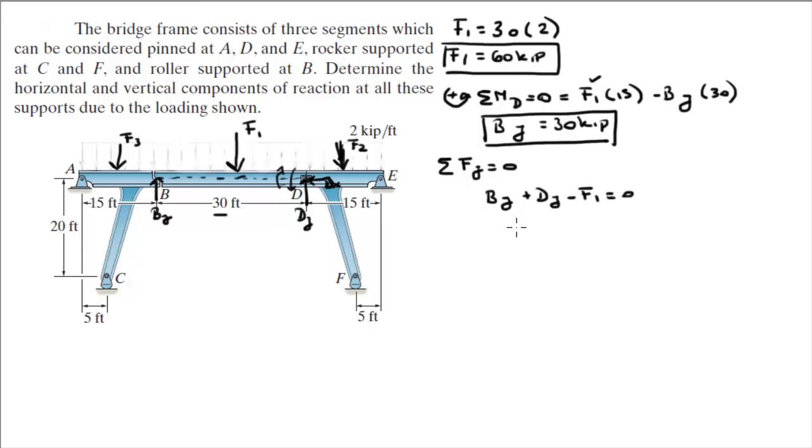BY is equal to, I'm sorry, we already got BY, I mean, DY is equal to 30 kip.